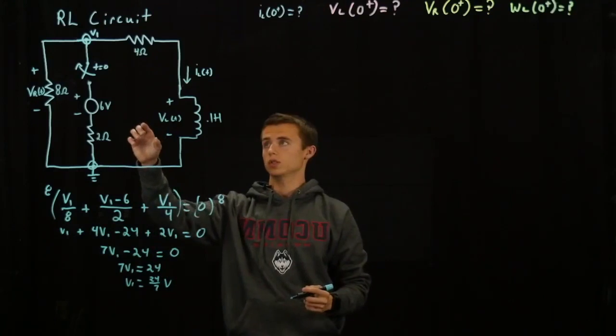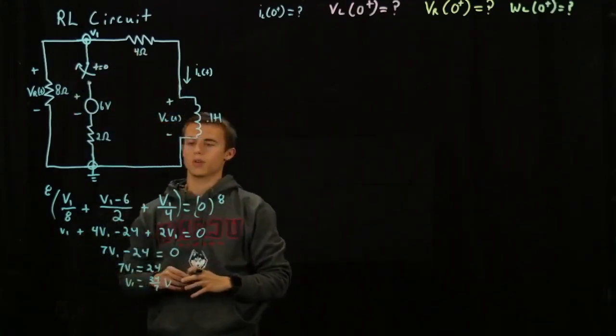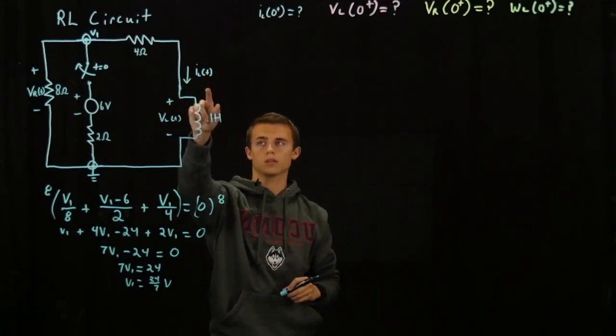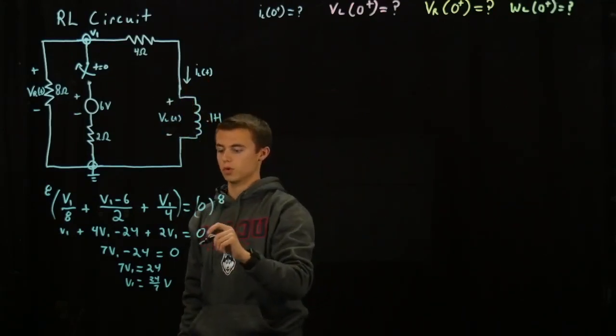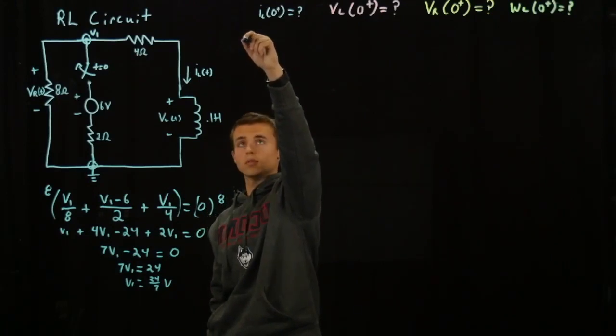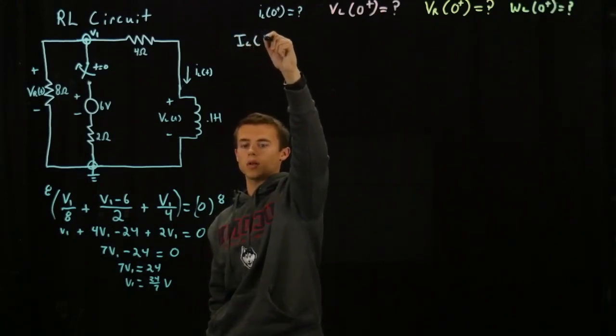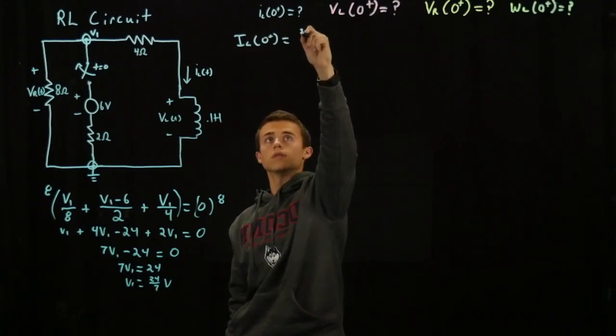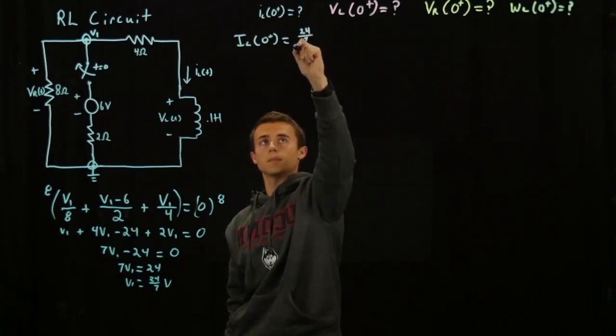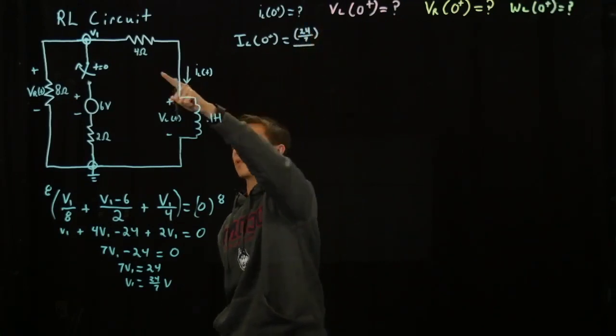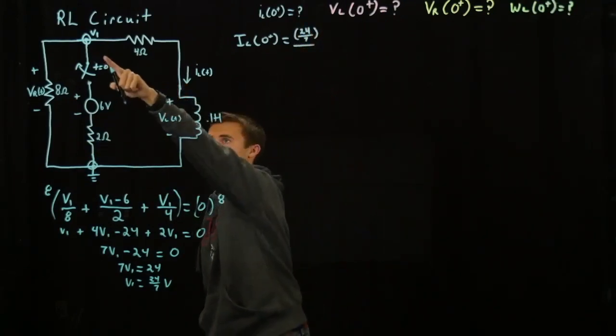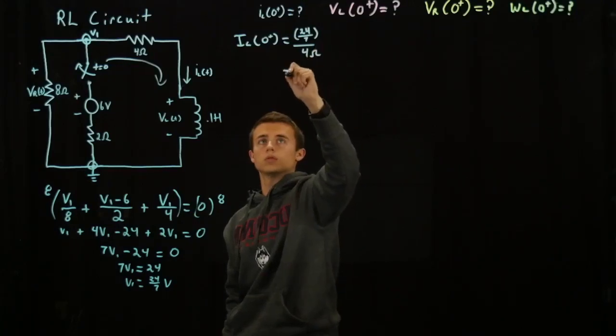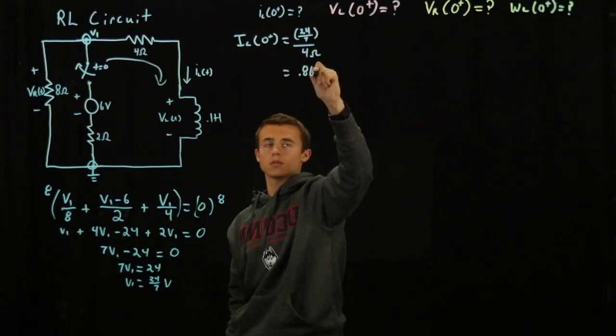From this node voltage you can solve the current going through the circuit past time 0 where the switch has been opened. So you can solve the current of the inductor going through this loop. So if we do Ohm's law right here, I_L of 0 plus is equal to 24 over 7 over the 4 ohm resistor which will give you 0.86 amps.